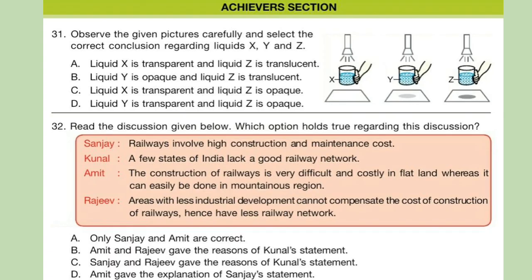Question 32: Read the discussion given below and select which option holds true. Sanjay: Railways involve high construction and maintenance cost. Kunal: A few states of India lack a good railway network. Amit: The construction of railways is very difficult and costly in flat land, whereas it can easily be done in mountainous regions. Rajiv: Areas with less industrial development cannot compensate the cost of construction of railways, hence have less railway network.